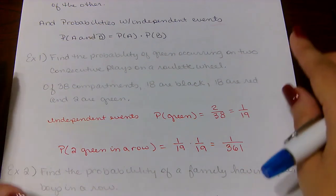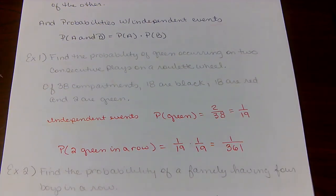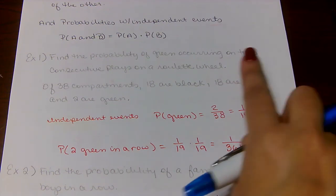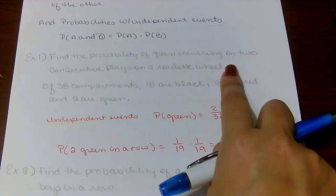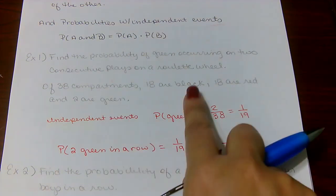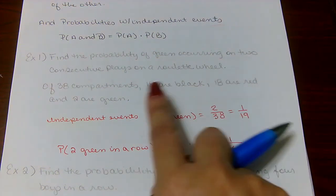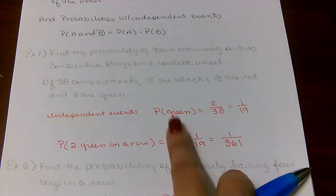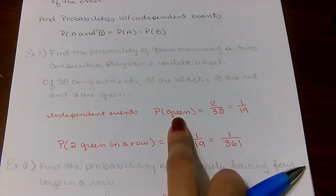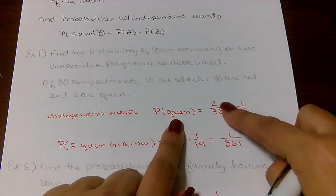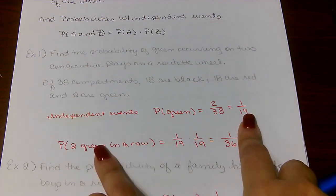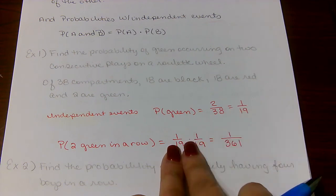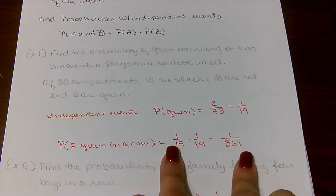Let's look at this example: find the probability of green occurring on two consecutive plays on a roulette wheel. When you spin a roulette wheel, one spin does not have an impact on the second spin. There are 38 compartments — 18 black, 18 red, and 2 green. So the probability of landing on green is 2 out of 38, which simplifies to 1 over 19. The probability of getting two greens in a row is 1/19 times 1/19, which is 1 over 361.